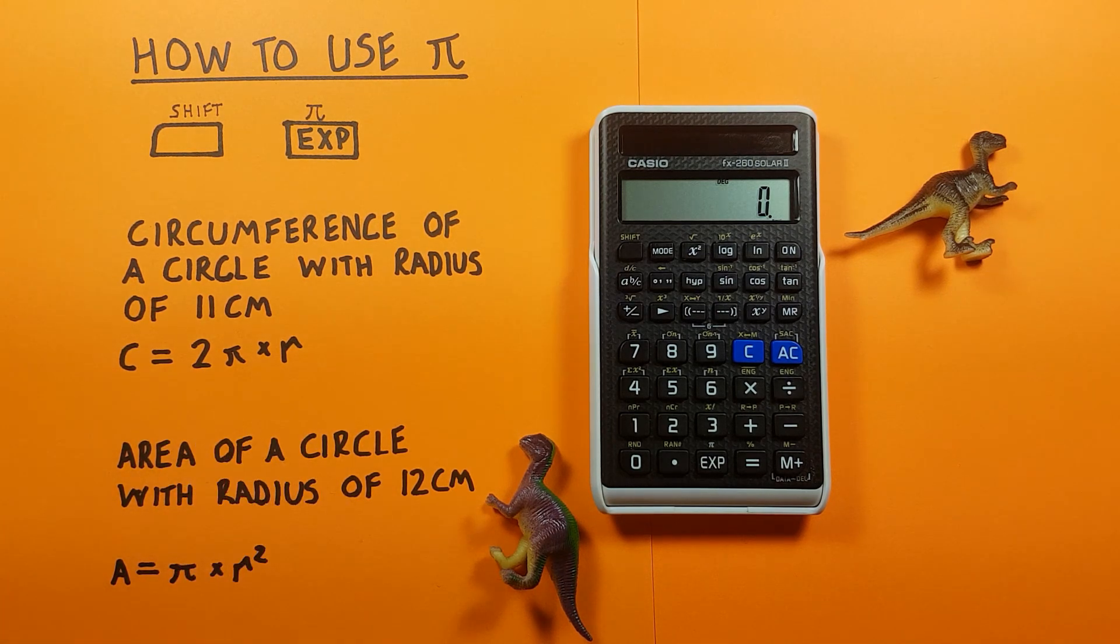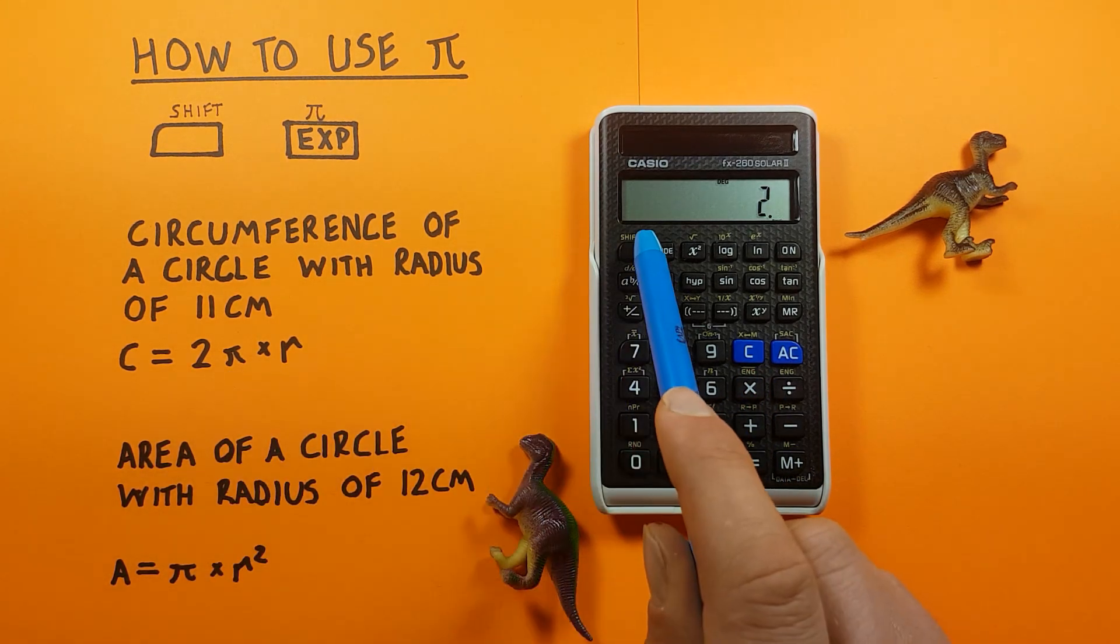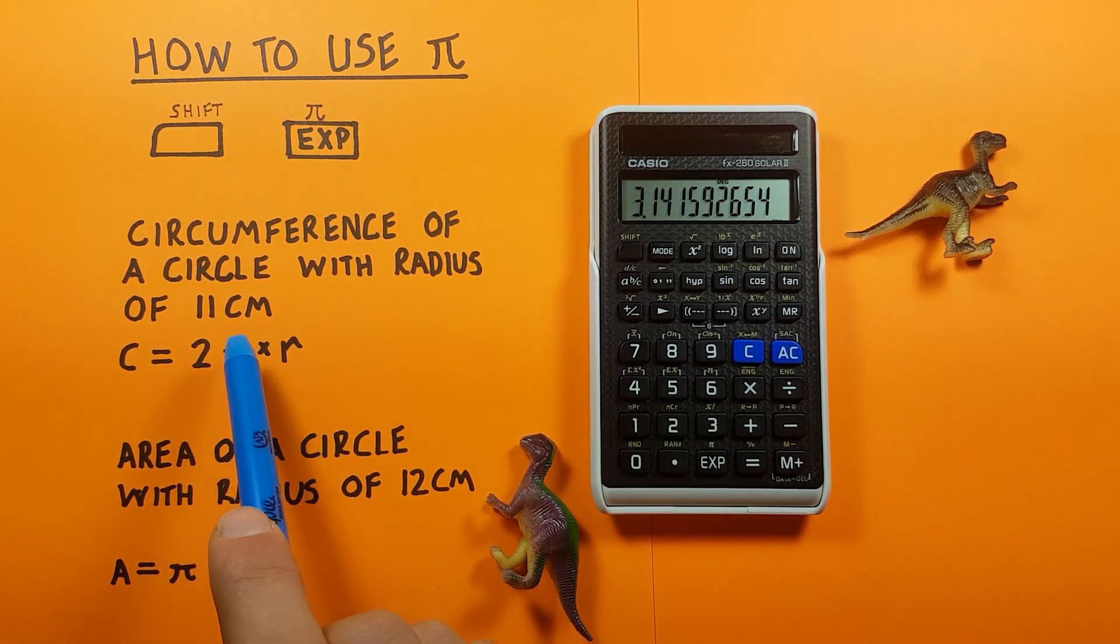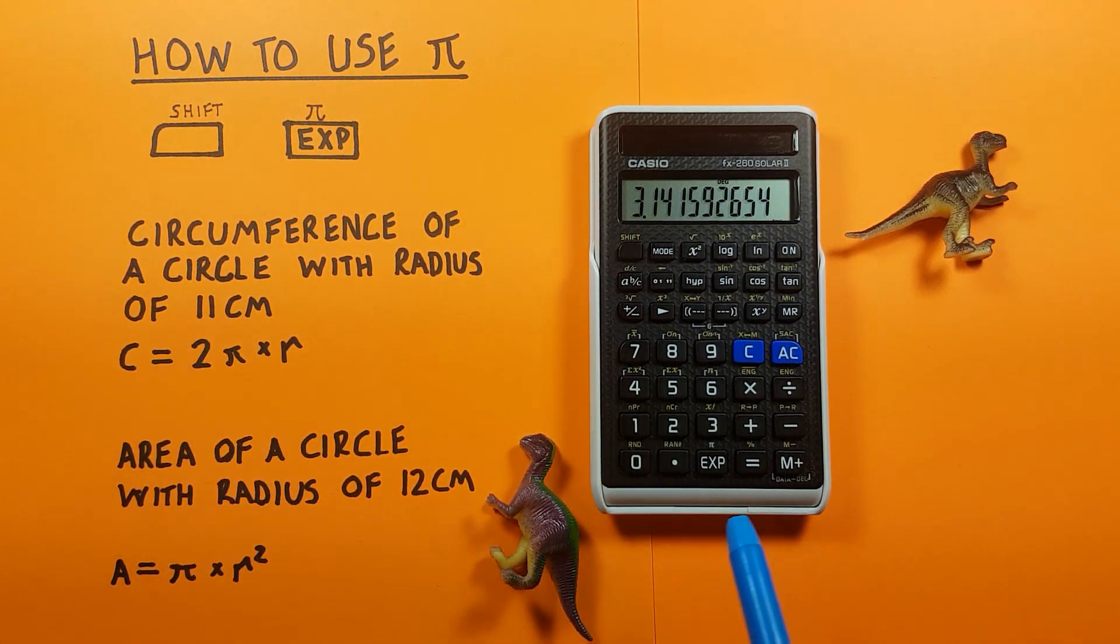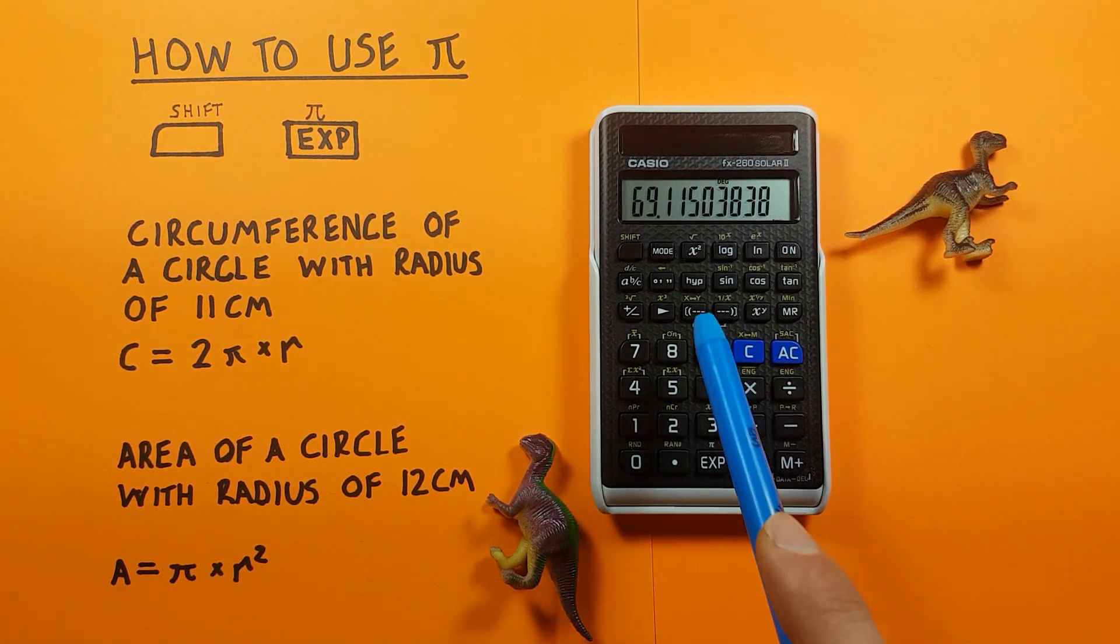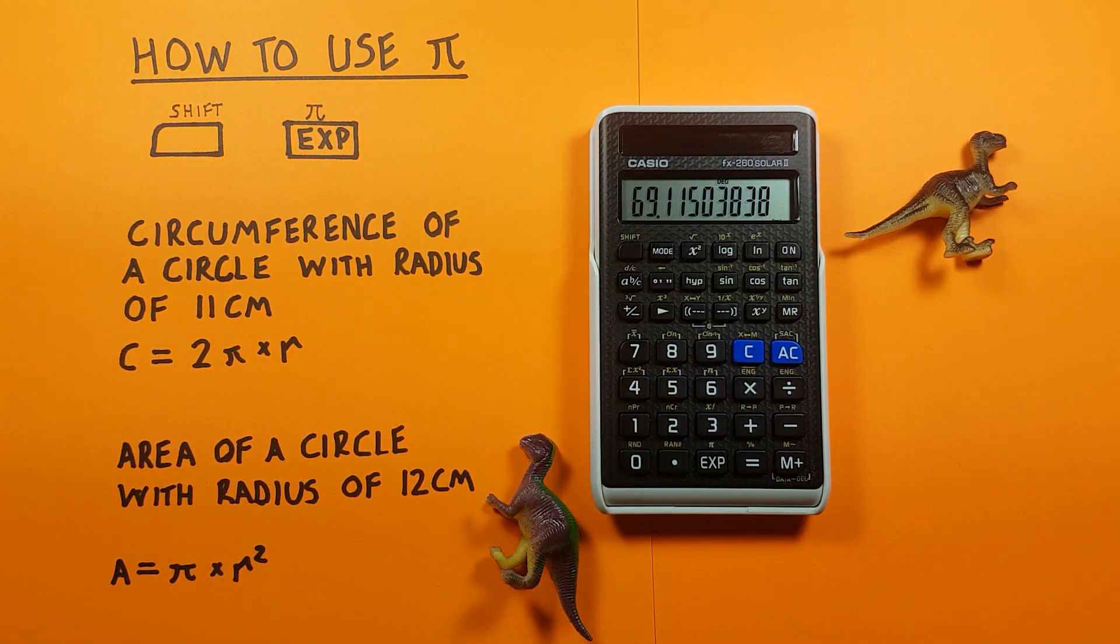You enter it just like you see it. You go 2 times and then our Pi so shift exp and then times R which for this is 11, and press equals and you see we get a circumference of 69.115 etc.